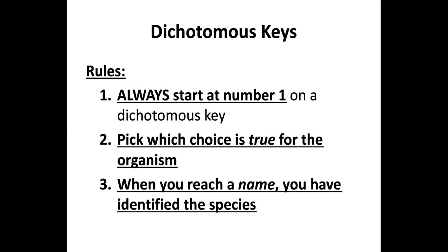There are three rules you need to follow. Always, always start at number one — and I'm going to show you why. Number two, pick which choice is true for the organism. At every number you're going to see two choices, an A and a B, and you have to pick which one is true. Then, once you go through the key and follow it, when you reach a name, that means you have identified the species and you're done with that organism. Then you look at the next one, start back at number one, choose between A and B, and follow until you get an answer.